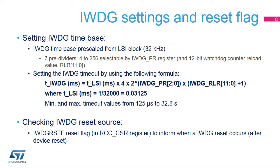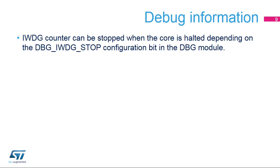Once a reset is generated by the IWDG peripheral, the corresponding flag, IWDG RSTF, is set in the RCC CSR register to inform the source of the reset. When the microcontroller enters debug mode — core halted — the IWDG counter either continues to work normally or stops, depending on the DBG-IWDG stop configuration bit in the DBG module MCU APB1 freeze register 1.